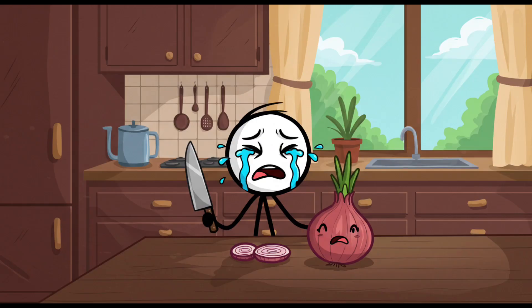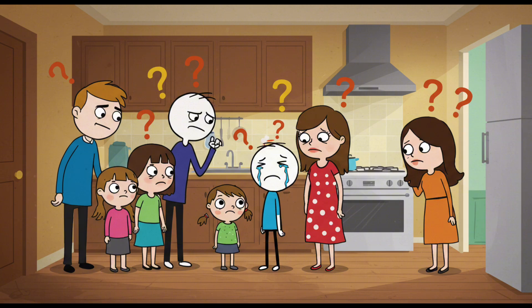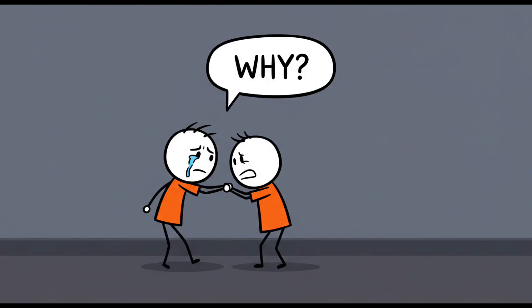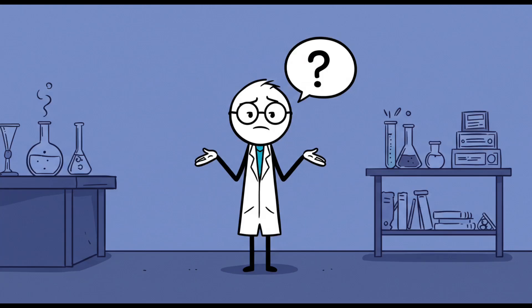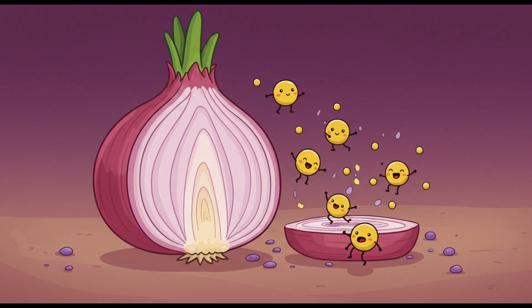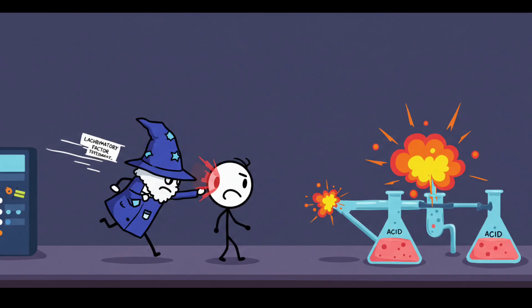You're chopping onions, minding your business, and suddenly it looks like you've just watched the ending of a Pixar movie. Tears streaming. Eyes burning. Your family wondering who broke your heart in the kitchen. Naturally, a kid is going to ask, 'Why do onions make you cry?' And here's the fun part. Scientists kinda know, but not fully. Onions release chemicals when their cells are damaged. One of those chemicals, called lacrimatory factor—yes, that's its actual name, it sounds like a Hogwarts spell—travels into your eyes and mixes with water to form a mild acid.